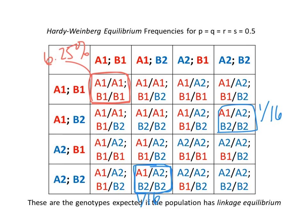In theory we're talking about a population, not a cross. You go into nature, sample a bunch of individuals from a population of organisms. You want to know — if you've measured the allele frequencies and they're all the same, A1, A2, B1, and B2 — when you start picking individuals out of the population, which genotypes should you see and at what frequency?